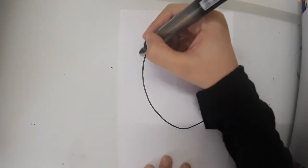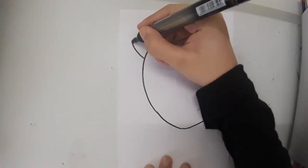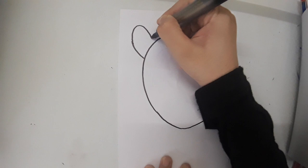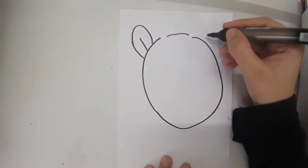So I have made the oval shape. Now I will draw the ears, another ear.